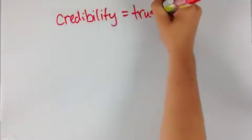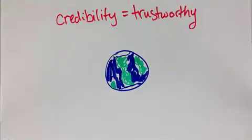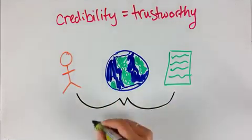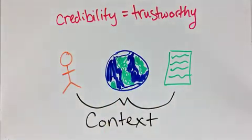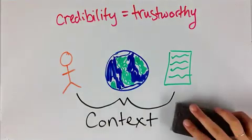The credibility or trustworthiness of an information source depends on where it came from, who it was made for, and how you use it. We call this the context. Effective researchers understand that the level of credibility and quality needed from a source will vary based on the context.